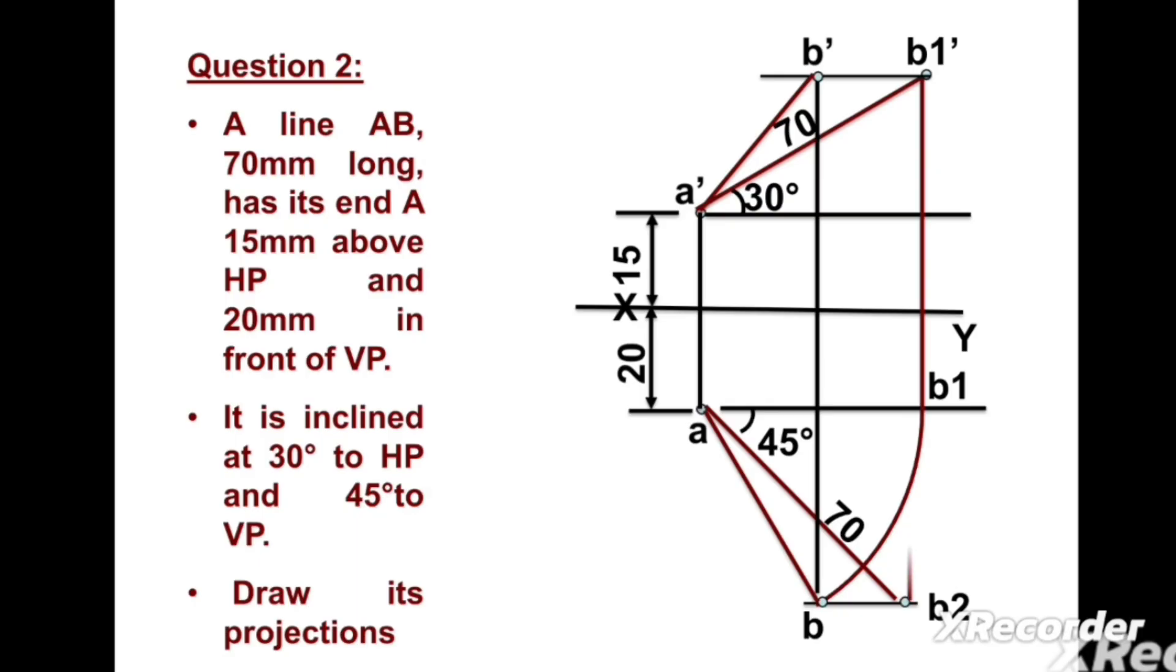Now we can draw a vertical line passing from b2, and this point we can consider as b2'. Consider k' b2' as the radius and draw one arc in anti-clockwise direction, considering a' as the center point.